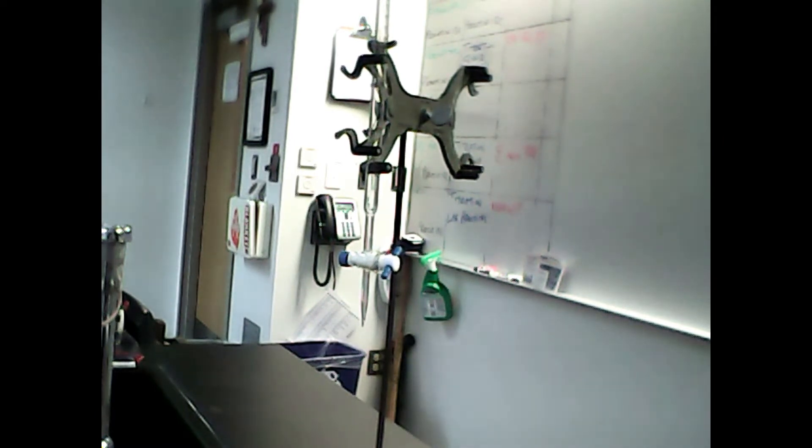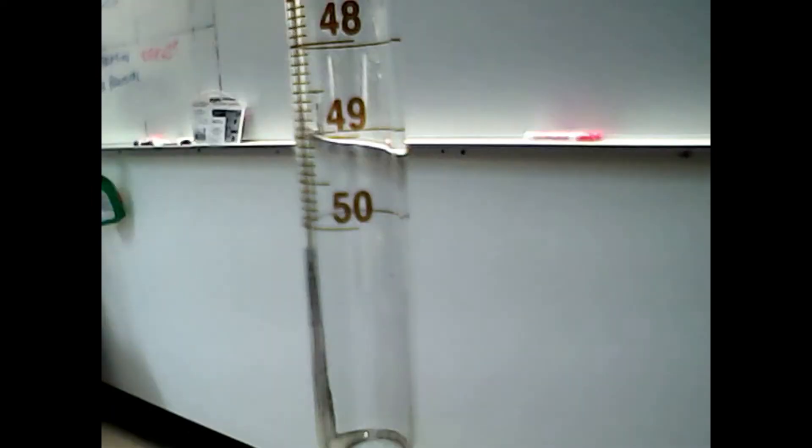It has some interesting markings on the side. We'll take a closer look. It is marked 50 milliliters, which tells us that the measurable volume that a burette can accurately tell us is anywhere between 0 and 50 milliliters.